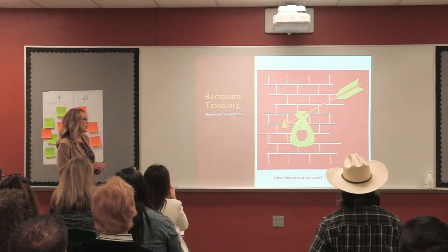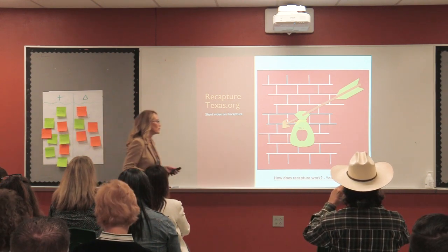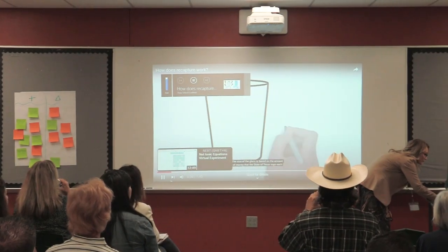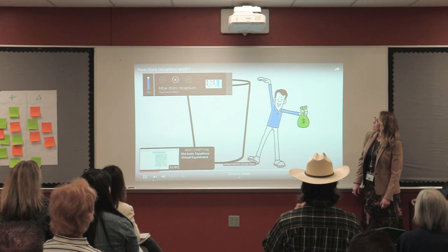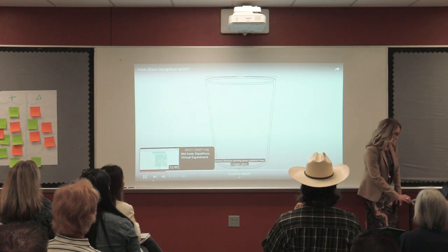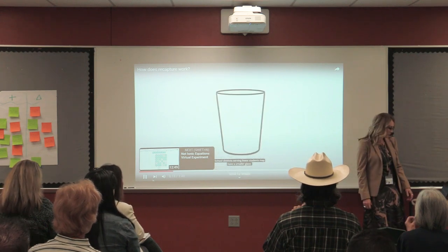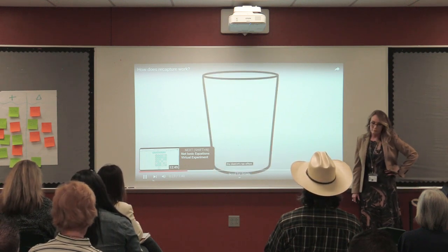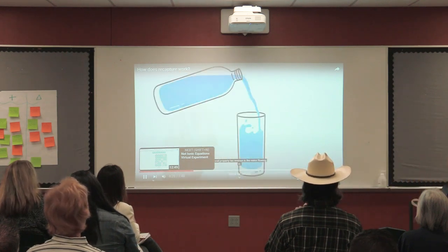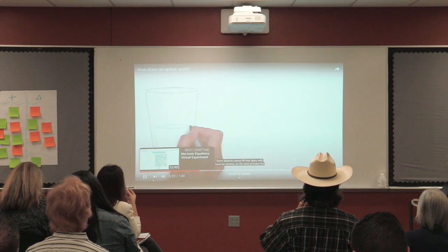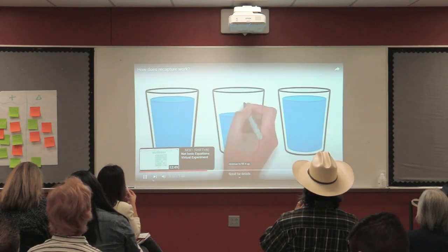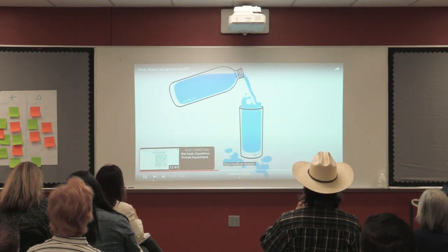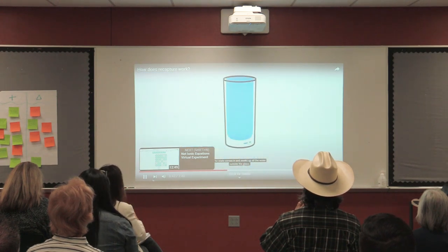I want to play a little video, and then we're going to break down how it really applies to Dripping Springs ISD. The size of the glass is based on the amount of money the state of Texas says each school district should have. School districts serving more students have a bigger glass; fewer students may have a smaller glass. Student and district characteristics can also increase the size of the glass, as does the district's tax effort. Local property tax revenue is like water flowing in. Some districts can't fill their glass with local tax revenue, so the state provides the revenue to fill it up. Sometimes the water from local tax revenue spills over — this is known as recapture. The state comes in and soaks up all the water outside the glass.